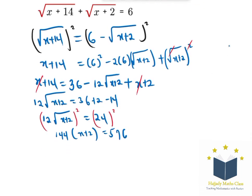Dividing both sides by 144, I'm going to have x plus 2 equal 4, and finally my x is the same thing as 4 minus 2, which is 2.